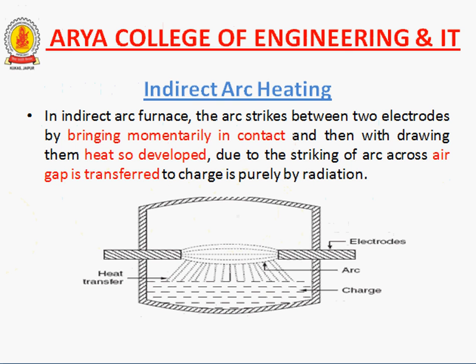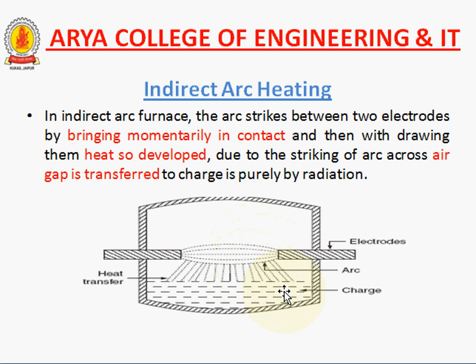Now we are going to indirect arc heating. In indirect arc heating, the arc strikes between two electrodes by bringing them momentarily in contact and then withdrawing them. The heat so developed due to the striking of the arc across the air gap is transferred to the charge purely by the radiation method, just like the sun — sun radiation comes to the earth. So these arcs provide radiation to the charge and the material becomes heated.